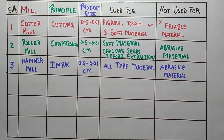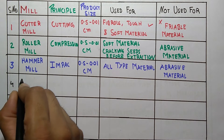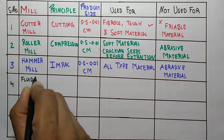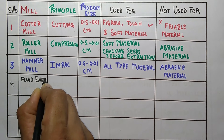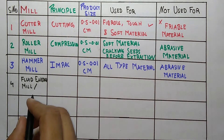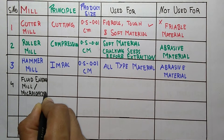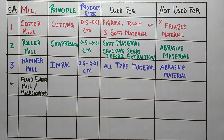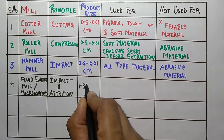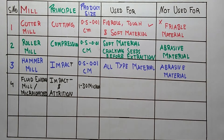The fourth one is fluid energy mill, also called micro-ionized mill. Its principle is impact and attrition. The size range is 1 to 30 microns. As its name indicates, it produces micron-sized particles.